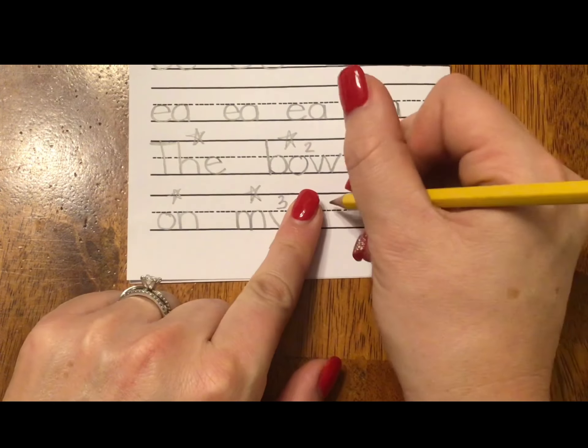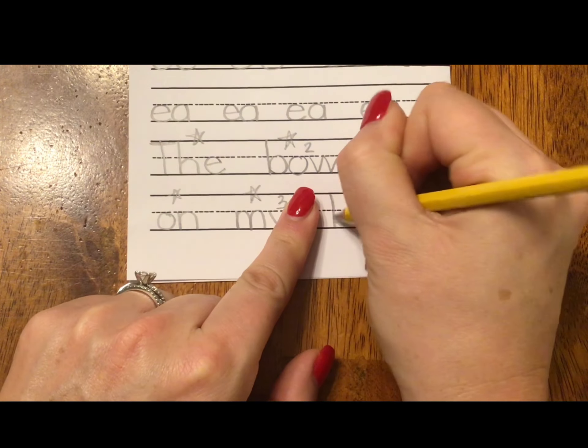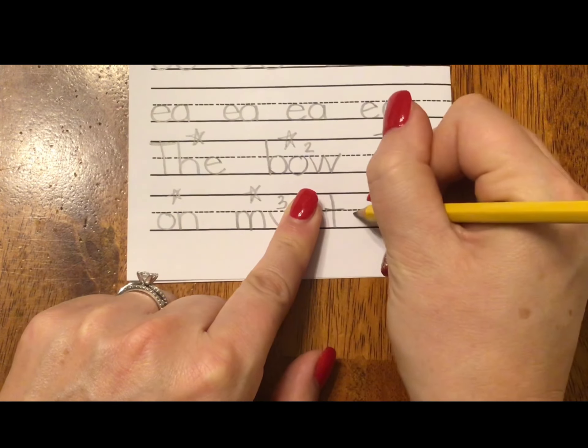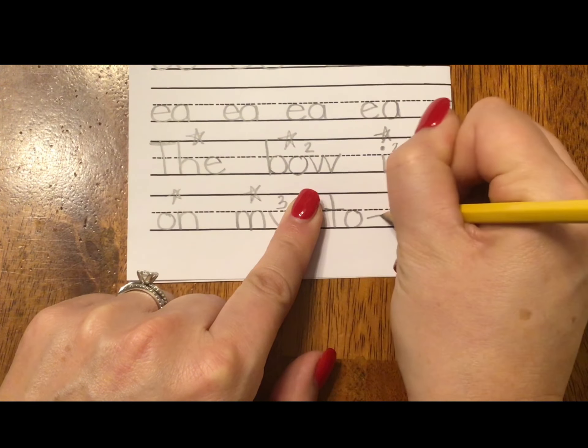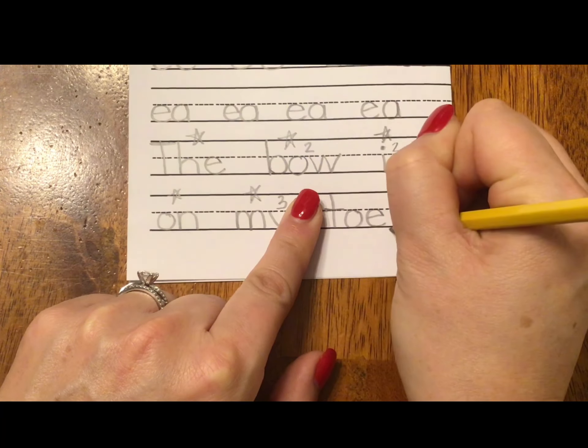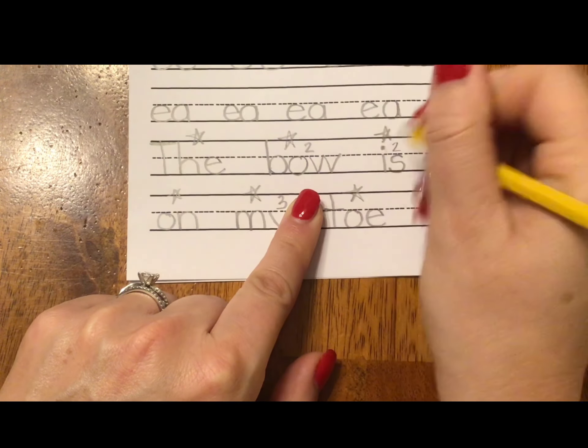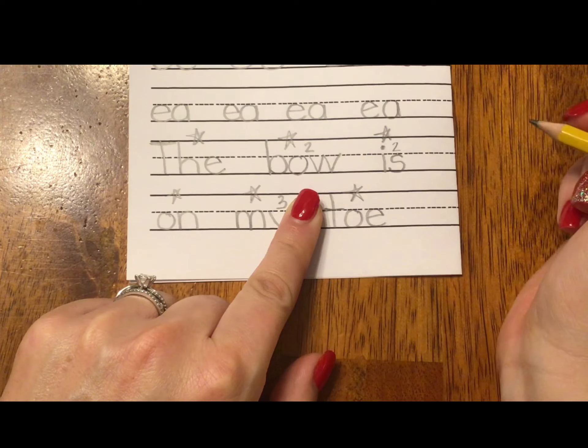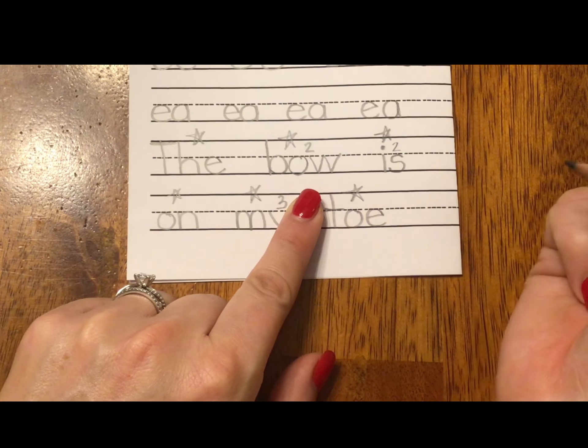The last word is toe. I said do T. And then I said use O that comes in the word toe, which is O, E. If you wrote T, O, E, toe, like the toe on your foot, give yourself a star or a smiley.